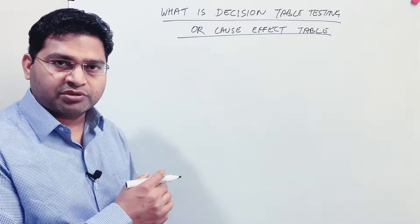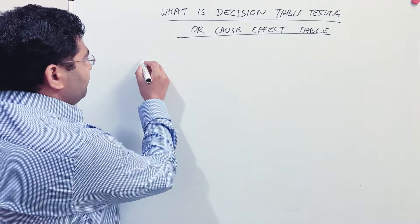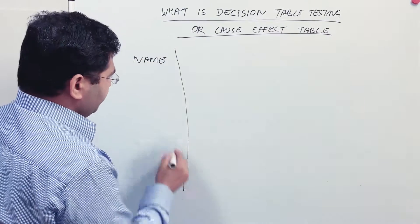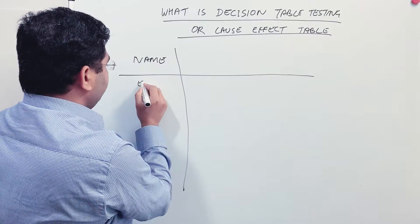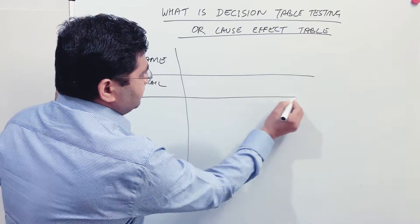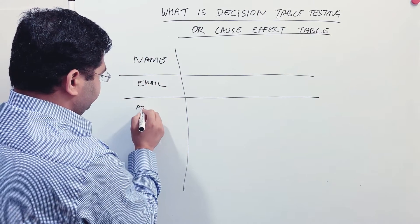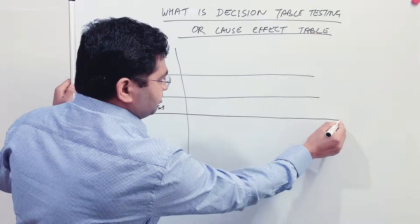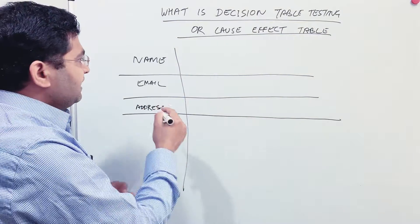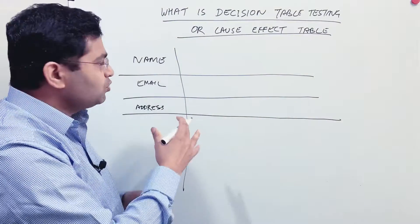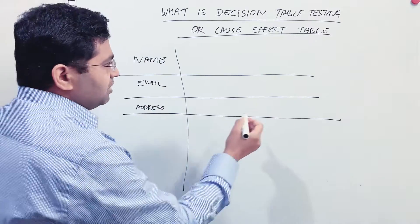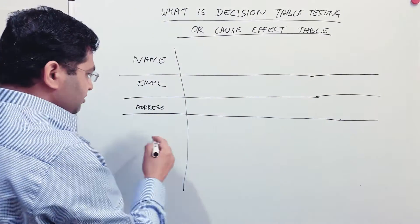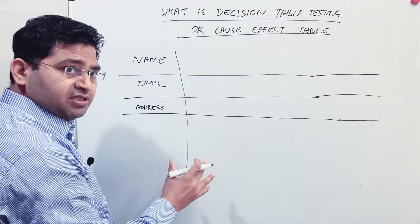The outcome — basically the error message or success message of the registration — depends on these three inputs. The registration portal has name, email, and address. These are three mandatory fields that need to be entered by the customer who wants to register on the portal. Based on the values the customer enters, there will be an appropriate success message or error message.